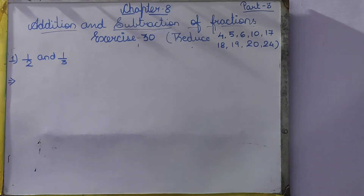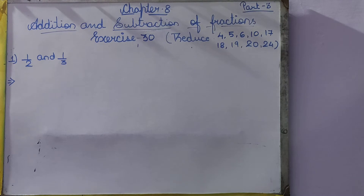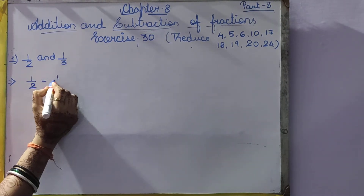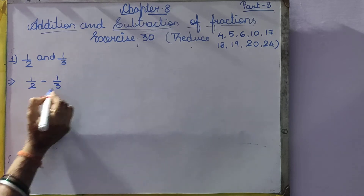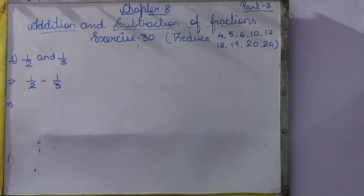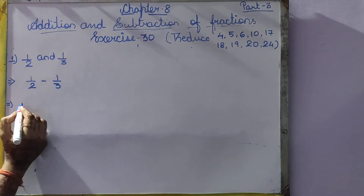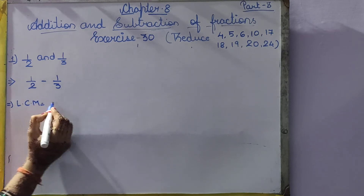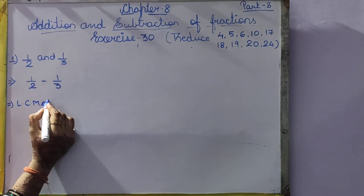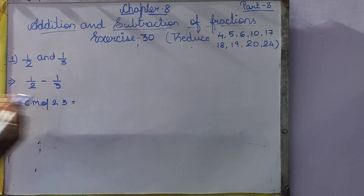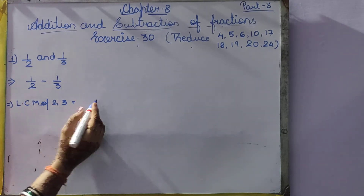The main question is: find the difference. Difference means minus. So 1 by 2 minus 1 by 3. Now see, both the denominators are different, so first we make the common denominator. So LCM of 2 and 3. We know that 2 3's are 6.